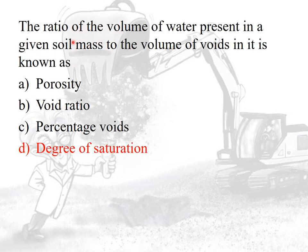The ratio of the volume of water present in a given mass to the volume of voids in it is known as degree of saturation. Porosity is defined as volume of voids to total volume of the soil. Voids ratio is defined as volume of voids to volume of solids. Percentage air voids (Na) is equal to the ratio of the volume of air to the volume of soil, multiplied by 100.